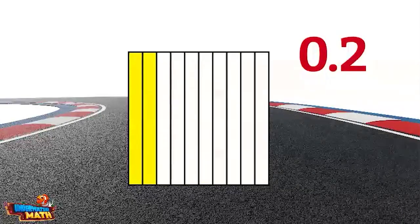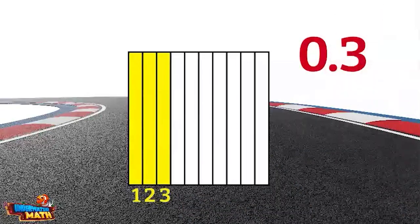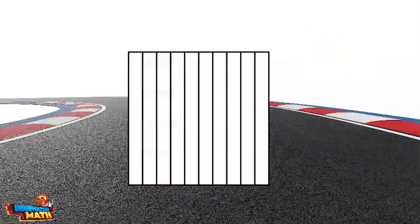You can show a decimal by shading any number of those tenths. Here we see three sections shaded—that means three-tenths are shaded. This model represents the decimal three-tenths. Now looking back at our whole, if we split each of those tenths into 10 equal parts, we will have 100 equal parts.